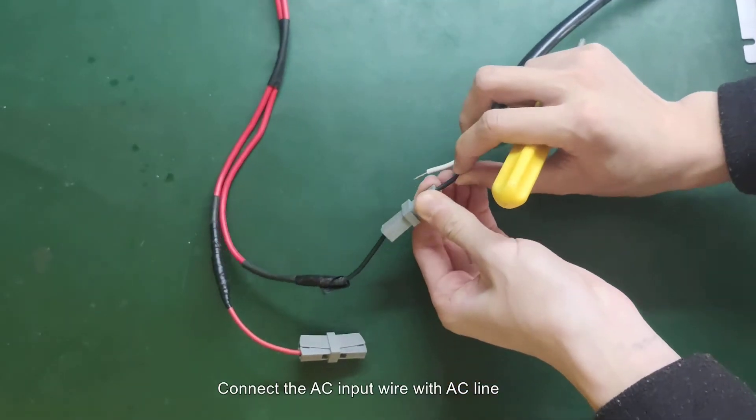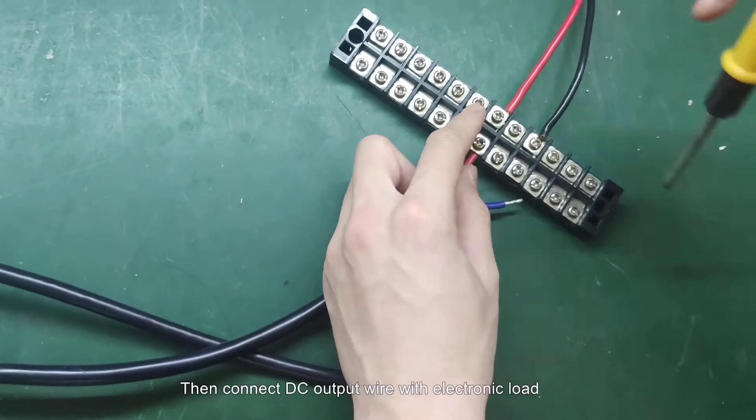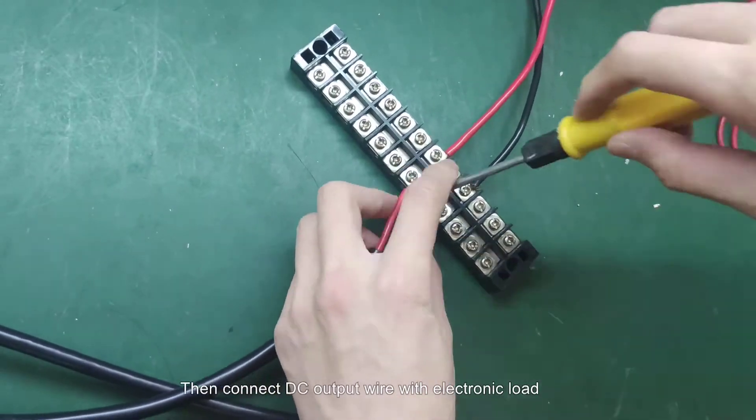Connect the AC input wire with AC line. Then connect DC output wire with electronic load.